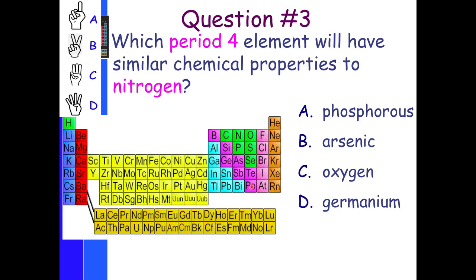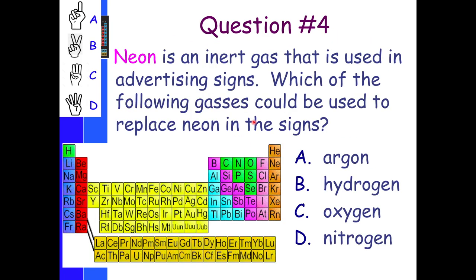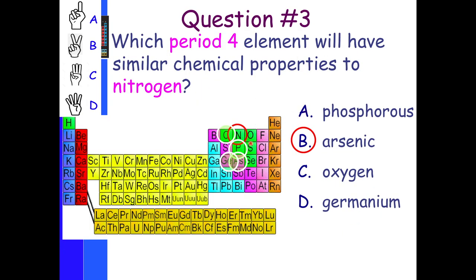Which period four element will have similar chemical properties to nitrogen? It could be arsenic, or it could be phosphorus. I'm sorry. Period four element will have similar chemical properties to nitrogen. It could be arsenic, or it could be phosphorus. I'm sorry. Period four element. So this is the only period four element. Sorry. So it's got to be arsenic. Aha. Good, Mr. Russell.